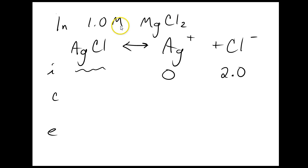MgCl2 is one molar, but when it dissolves, there's two Cls produced for every mole of MgCl2. Okay, then I drop my AgCl in there, and it's going to start to dissolve.